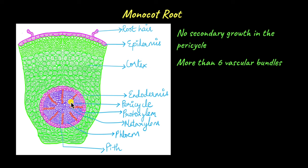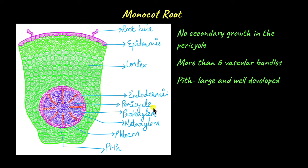Around six to eight patches of vascular bundles are seen in monocot roots — eight xylem patches and in between them eight phloem patches. The number is higher compared to dicot roots which have only around two to four vascular bundles. The vascular bundles are still arranged in a radial alternating manner. The pith in monocot roots is large and well developed, storing water and nutrients.